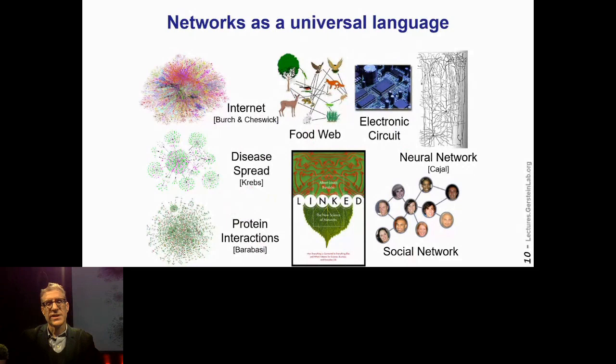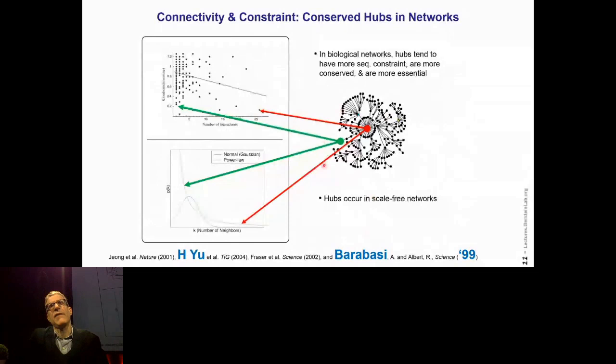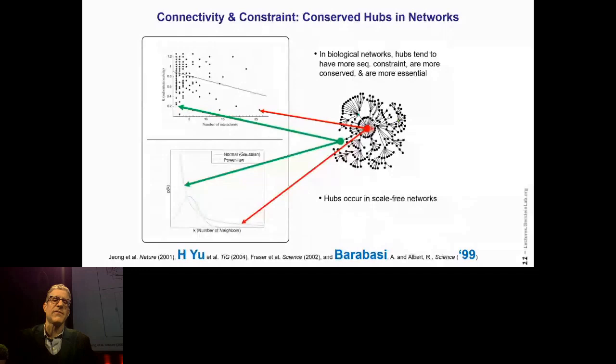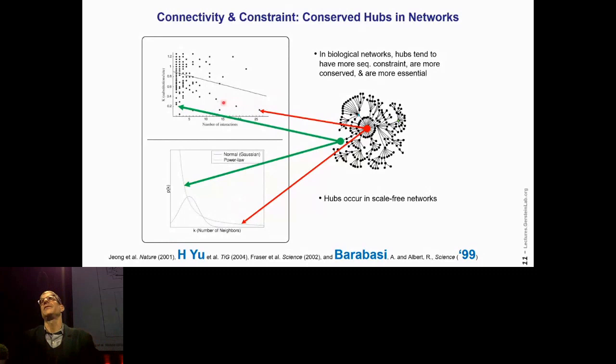One of the things people were really interested in with networks initially, Barabasi in particular, was that most natural networks have what's called a scale-free structure. If you look at their degree distribution, it doesn't look like a random network — it has this long tail representing hubs, highly connected parts of the network. One of the things we discovered, in particular with my great student Haiwan Yu, was that the center points in a lot of biological networks tended to be more conserved, more constrained.